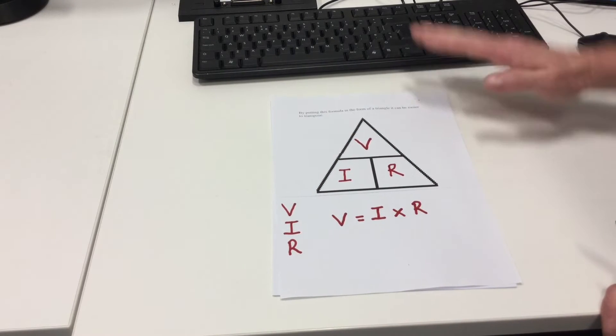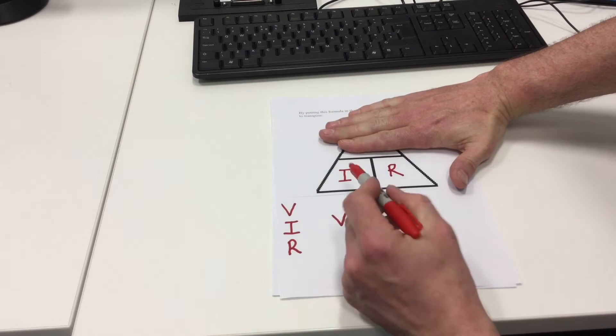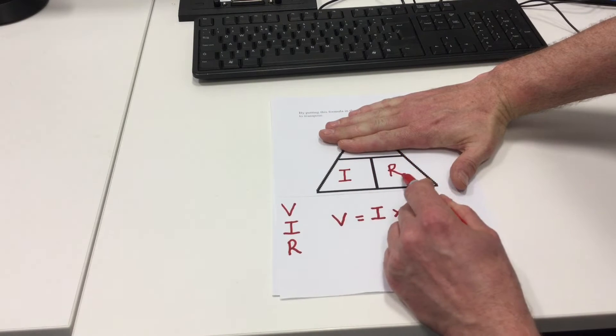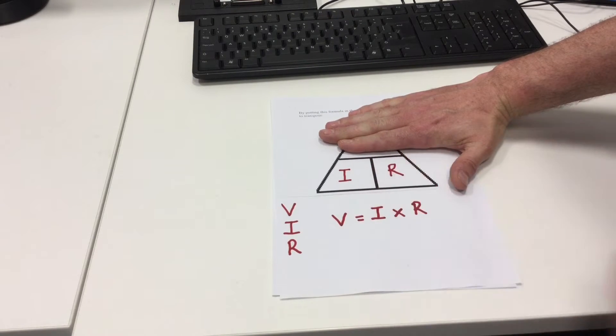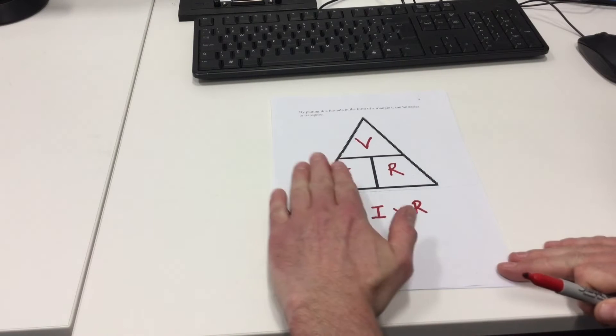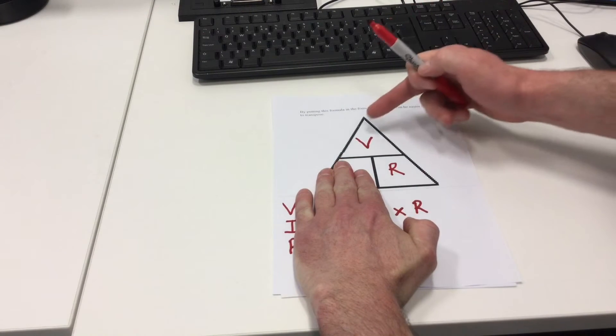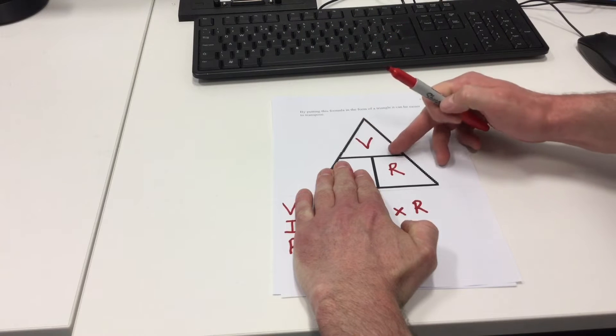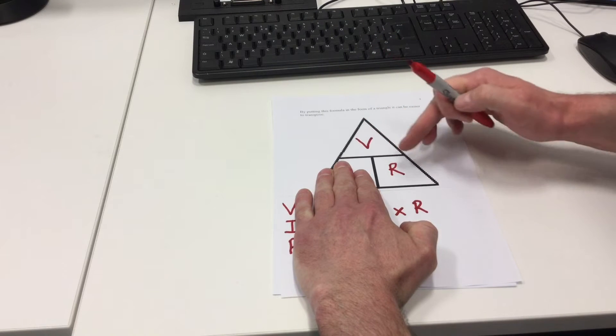To try and find voltage, cover over voltage, we're left with I multiplied by R or current multiplied by resistance. If we needed to find current, cover over I and we're left with voltage divided by resistance or V divided by R.